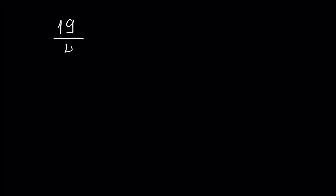Assume we have a fraction — an improper fraction — when the numerator is bigger than the denominator. Assume this is 19 over 4. Since we have 4 inside 19 four times, it will be 16, and the remainder is 3. We write the whole number 4, then write 3, and the denominator stays unchanged.